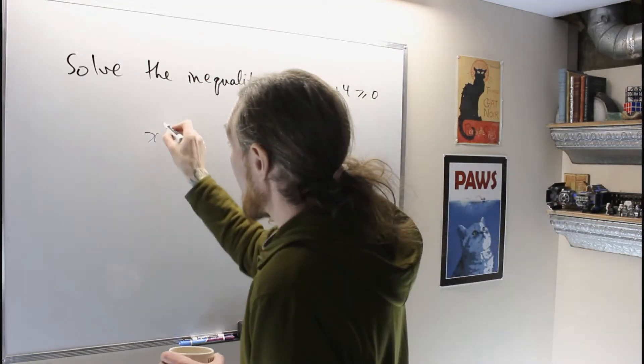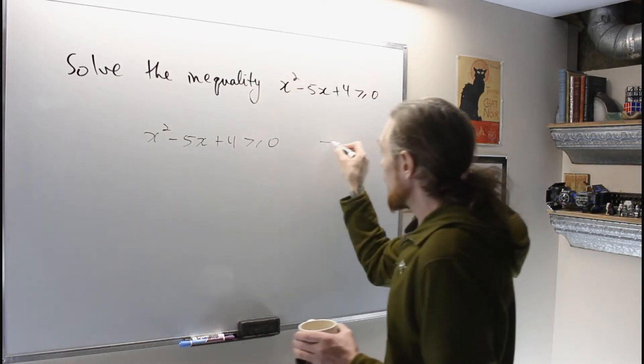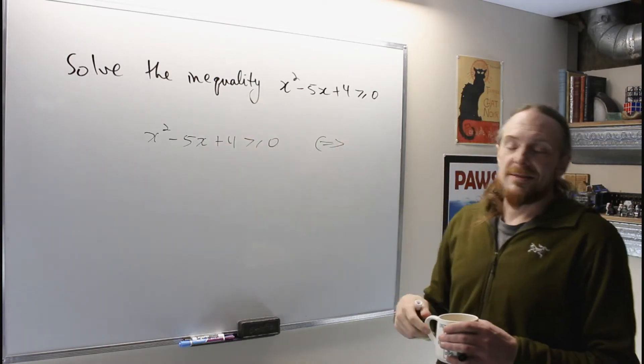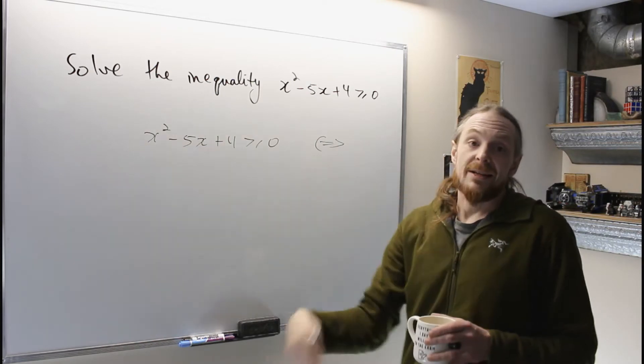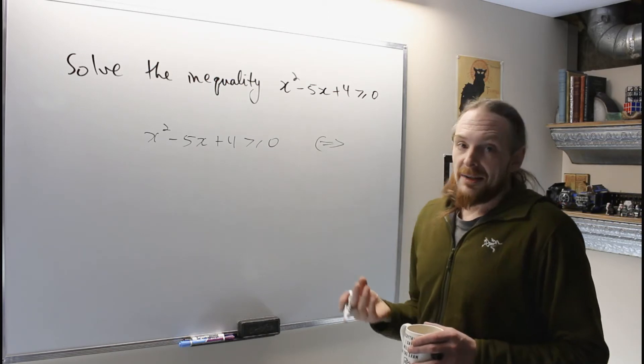Basically I have x squared minus 5x plus 4 is greater than or equal to 0. Never start square-rooting, this is the wrong idea. What we're going to do is the strategy always is we have to factor the nonlinear thing they've given you. So if there's any justice in the world, they've given us something which will be factorizable.